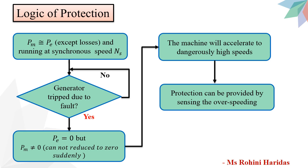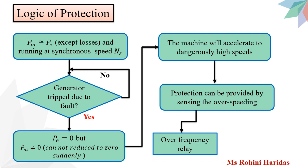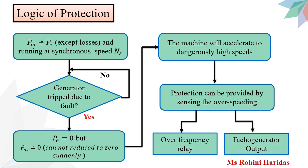The speed governing mechanism is basically responsible for detecting this condition. However, overspeeding can also be detected either by an overfrequency relay or by monitoring the output of the tachogenerator mounted on the generator shaft.